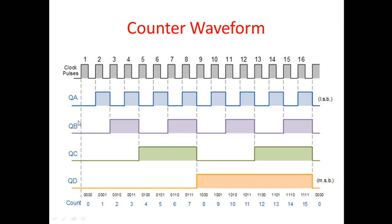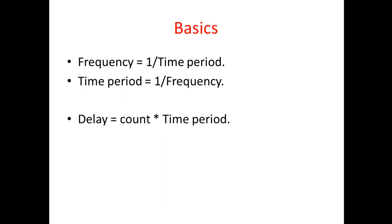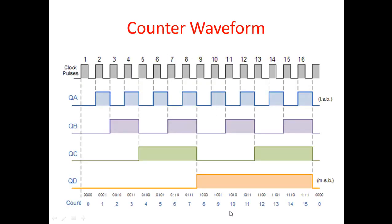If I want any specific time delay, suppose the count is 0010, I can calculate the time period by multiplying that count value by the time period of the clock. That gives the required delay. Frequency is one over time period; time period is one over frequency. To find the delay to any specific count, multiply the counter value by the time period. If you have doubts, refer to your earlier course material on counters, frequency, and delay.